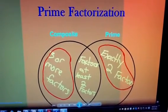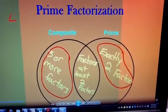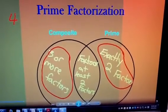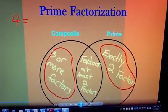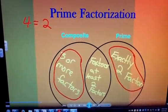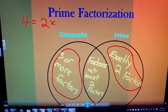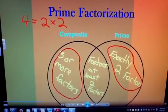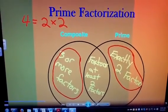If we took a very simple composite number, like four, and we wrote it as a product of the two prime factors of two times two, then the prime factorization for four would be two times two.